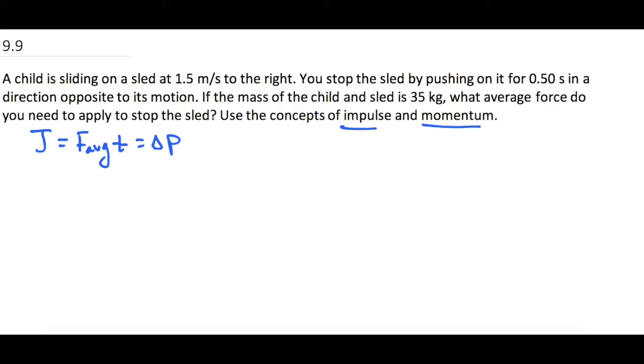So let's go ahead and write down the stuff that they gave us first off. So they tell us the mass. The mass of the child in the sled is 35 kilograms. They tell us the initial velocity is equal to 1.5 meters per second and they say it's to the right. And then we know the final velocity is equal to zero meters per second because they say we stopped the sled.